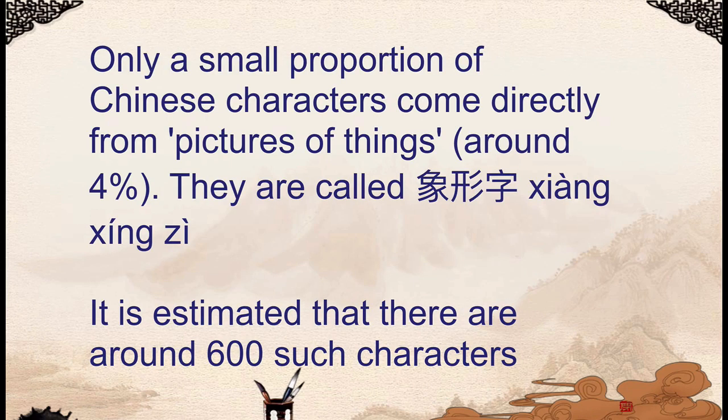There's actually quite a lot of confusing information out there about Chinese characters, which implies that most of the Chinese characters out there are pictures of things. But actually this isn't true. Only a small proportion of Chinese characters come directly from pictures of things — only about 4%, maybe even less. These characters are called xiaoxingzi, or pictograms, and it's estimated that there are about 600 of these characters. But they are the minority among Chinese characters.